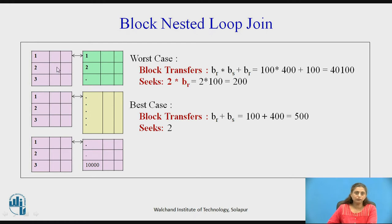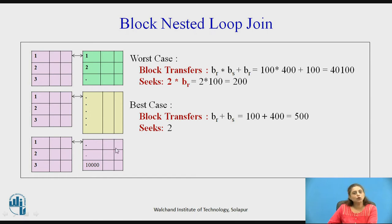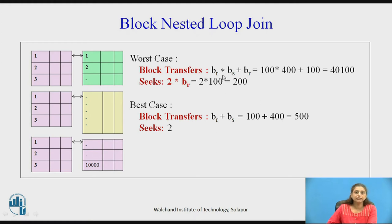All tuples of block 1 of relation R are compared with block 1 of relation S, then with block 2, block 3, and so on through the last block. For the first block of R, all BS blocks of S are read. For the second block of R, all blocks are read again, resulting in BR × BS total block transfers for S. The blocks of R are read only once, adding BR transfers. So total block transfers = 100 × 400 + 100 = 40,100, which is much less than nested loop join. Seek operations are only 200, compared to 5100 in nested loop join. In the best case where the inner relation fits in main memory, only 500 block transfers and 2 seek operations are required.